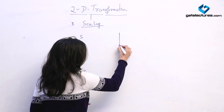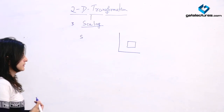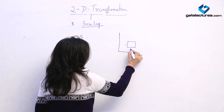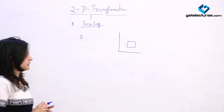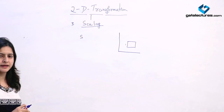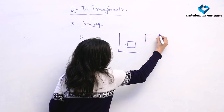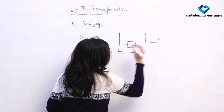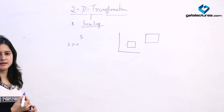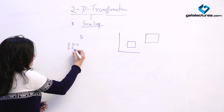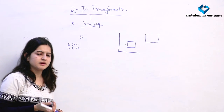Suppose we are having a square in the coordinate system with 1 unit. We can scale this square by multiplying with the scaling factor and increase the size of the object. If the value of s is greater than 0, this means we are increasing the size of the object. If the value of s is less than 0, meaning s is negative, this means we are decreasing the size of the object.